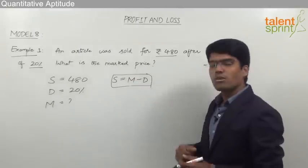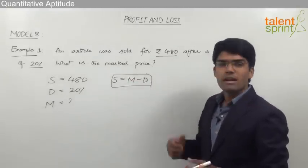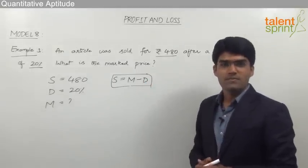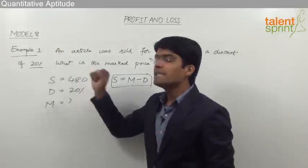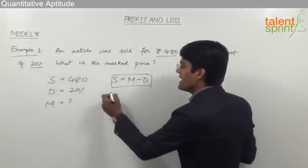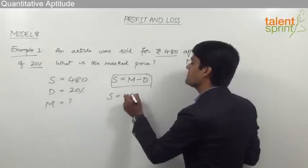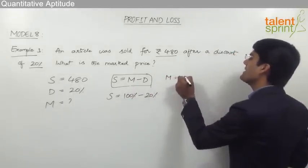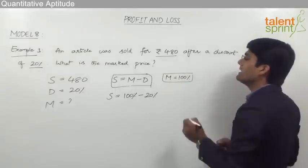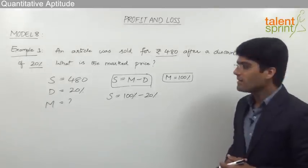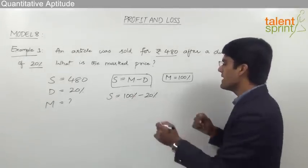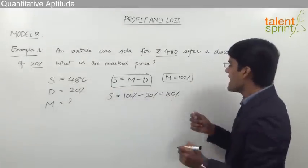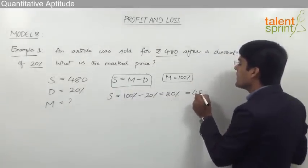Marked price is always 100%, and the discount should be taken on marked price. Accordingly, we find selling price as marked price minus discount percentage. The discount here was 20%, so selling price is 100% minus 20% = 80% of marked price. From the question we know that selling price is 480, so we can say that 80% is equivalent to 480.